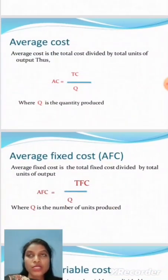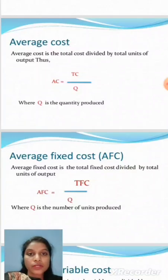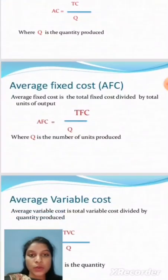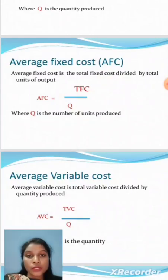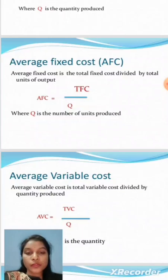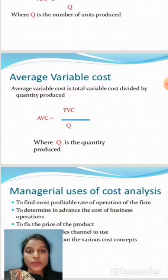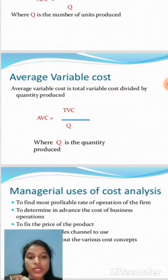Average cost is the total cost divided by the total number of outputs. The formula is: Average Cost (AC) = Total Cost (TC) divided by total units of output (quantity produced). Average variable cost is the total variable cost divided by quantity produced, expressed as: AVC = TVC divided by Q.